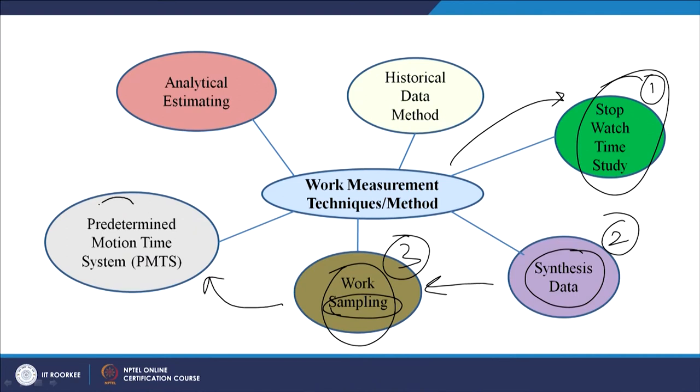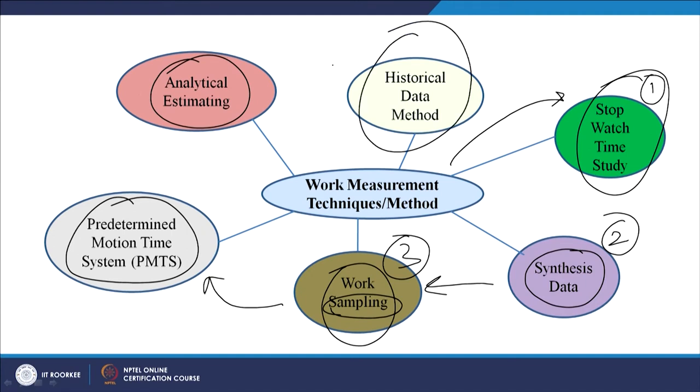Today's session introduces the various techniques for finding out or calculating the standard time. The third technique is work sampling, the fourth is predetermined motion time systems, the fifth is analytical estimating, and the sixth is the historical data method.